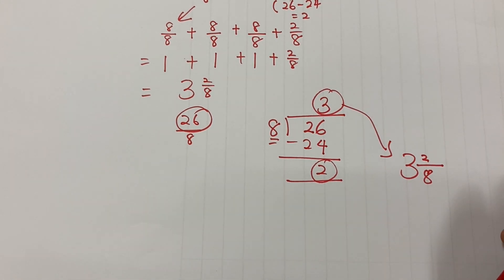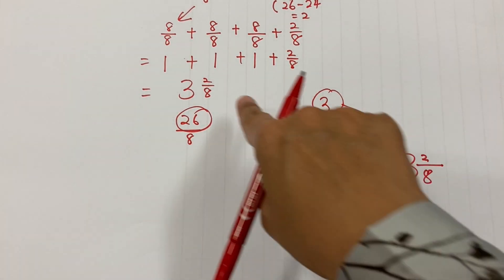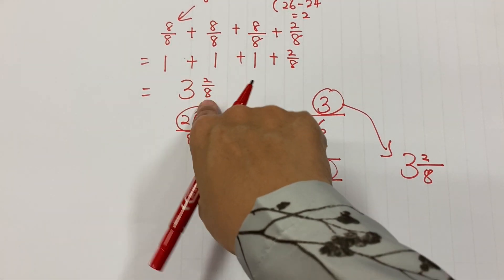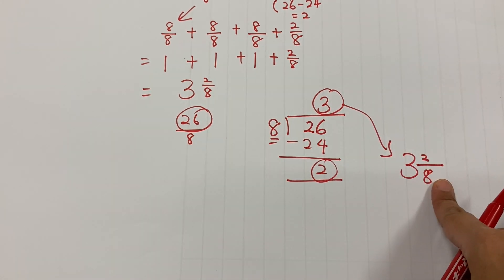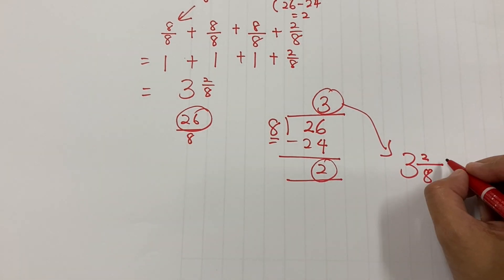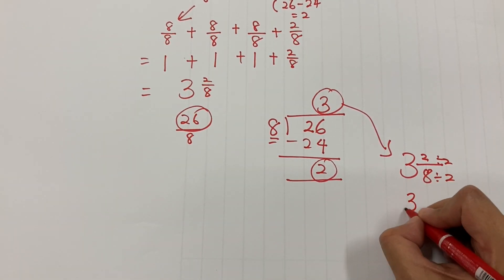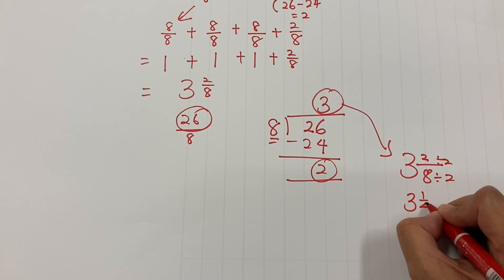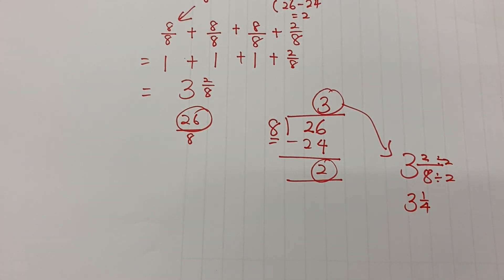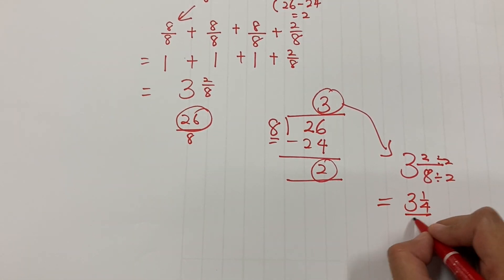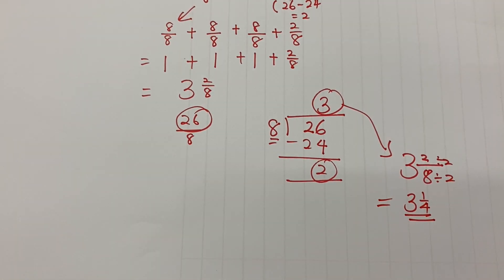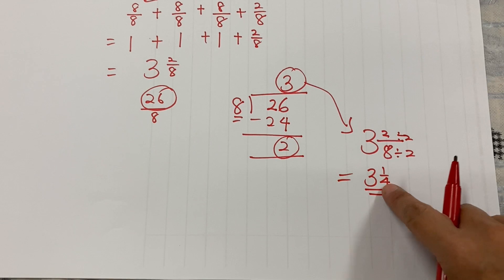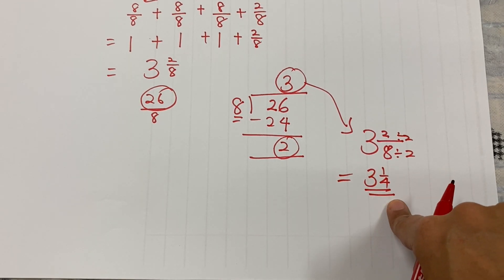Whichever method suits you — make sure your answer is always in the simplest form. For 3 whole 2 out of 8, you need to simplify it to 3 whole and 1 quarter. That's your final answer in simplest form.